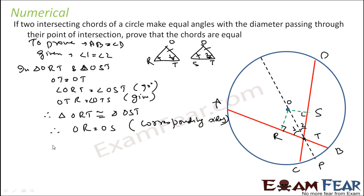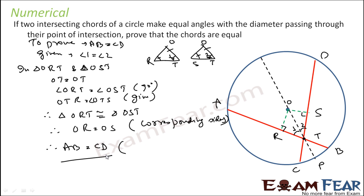If OR is equal to OS, therefore AB is equal to CD. Why? Because OR and OS are nothing but the distance from the center to the chord. So if these two distances are the same, the chords are also the same. Thus AB is equal to CD, and that is what we have proved.